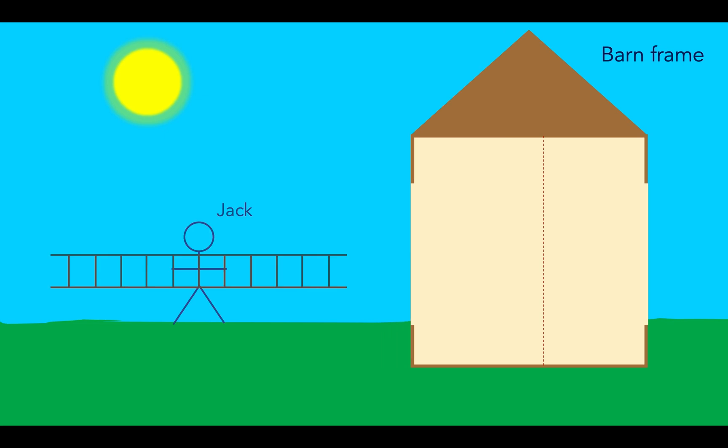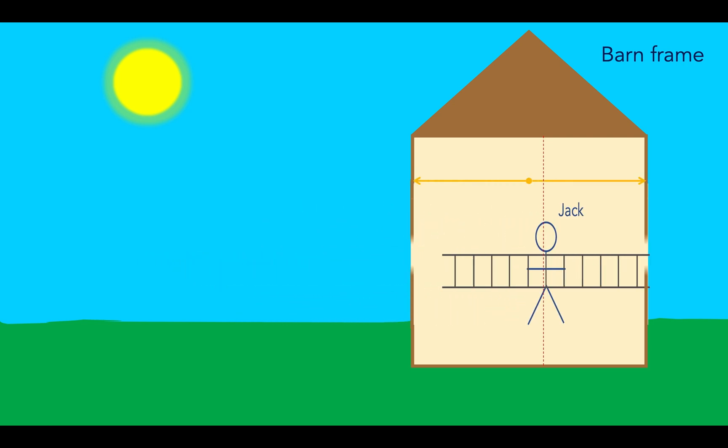Now let's see how this works with a concrete example. Imagine we have a sensor that detects the presence of the ladder, and when the front of the ladder reaches the sensor, a flash of light is emitted from the center of the barn.